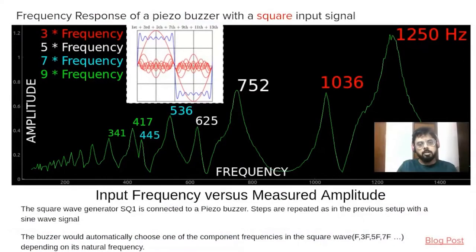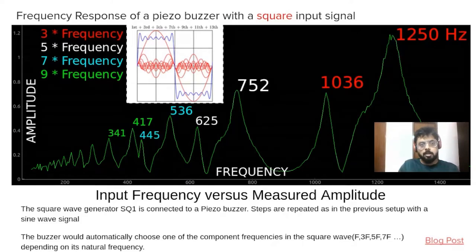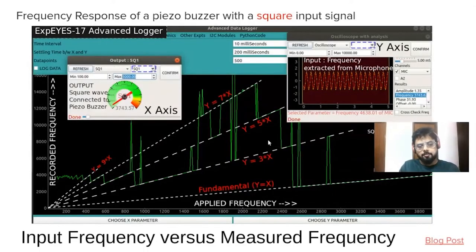We saw earlier during the Fourier series demo that you can make a square wave by combining sine waves, and the converse is also true. If you excite this buzzer in this experiment using a square wave, what happens is that the buzzer picks up the closest component of the Fourier expansion. So even if the buzzer has a three kilohertz resonance, if you're excited with a thousand hertz square wave, it will take up the 3x component and still resonate. To confirm that this is the case, you can track the recorded frequency as a function of the applied frequency. You can see that the recorded frequency is always along the lines of either 3x of the applied frequency or 5x or the fundamental or 7x.